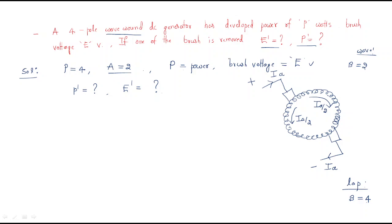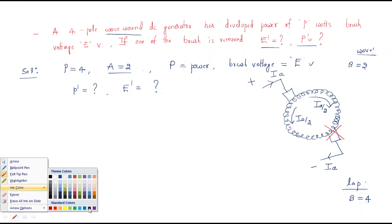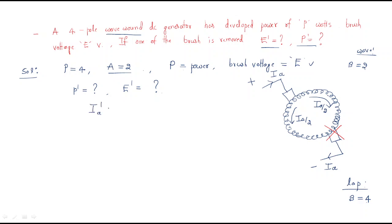The problem states that one brush is removed. If that brush is removed, it is open, and there is no path for the current. Therefore, the current I prime becomes zero — current enters but has no exit path. Brush voltage also becomes zero since there is no point to collect it. Therefore, the power developed also becomes zero. This is an important case: in wave winding, if one brush is removed, the total power developed becomes zero.